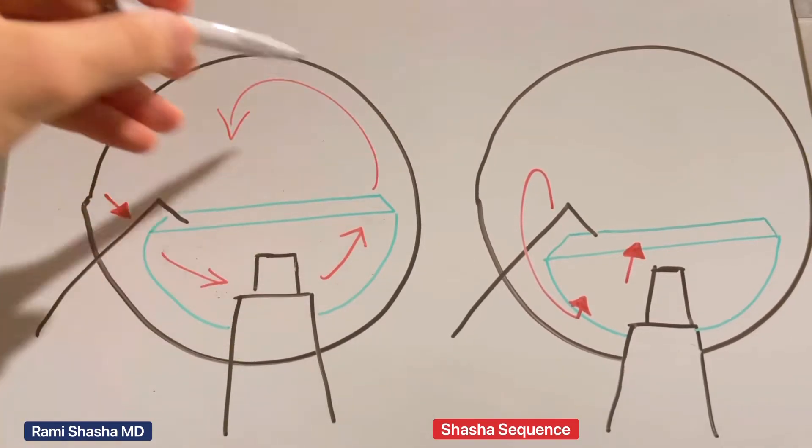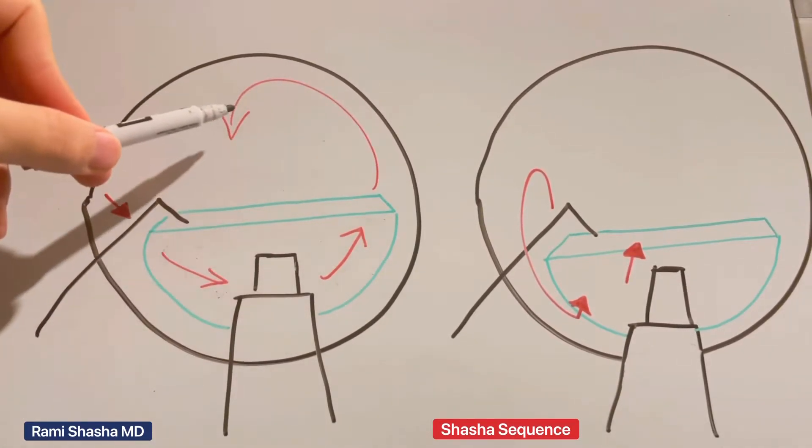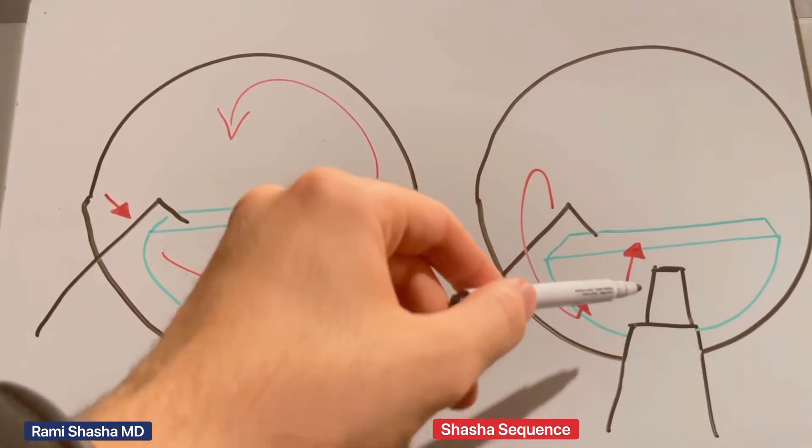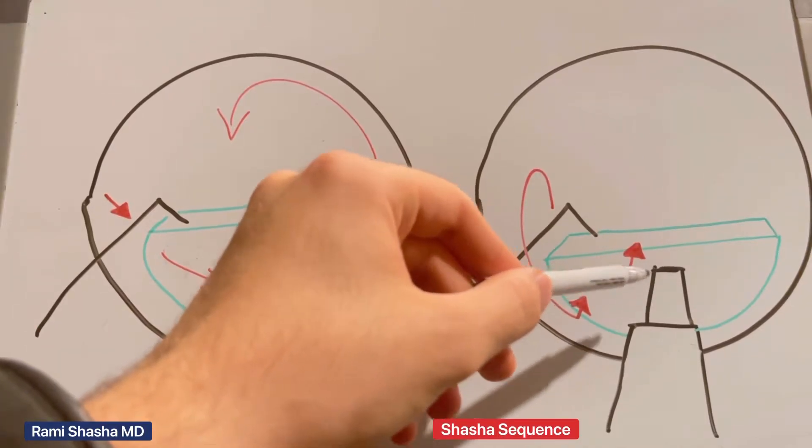When you rotate all the way around, the distance from the phaco tip to the endo-nucleus is farther. Here it's right next to it, so you may as well make use of this advantage.